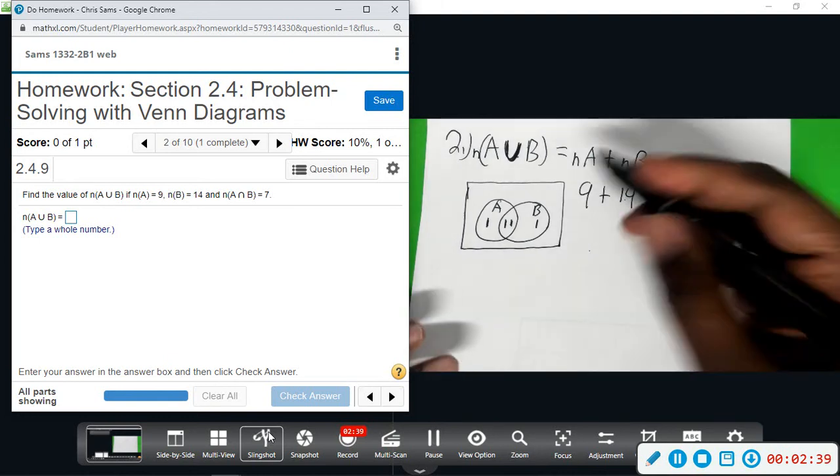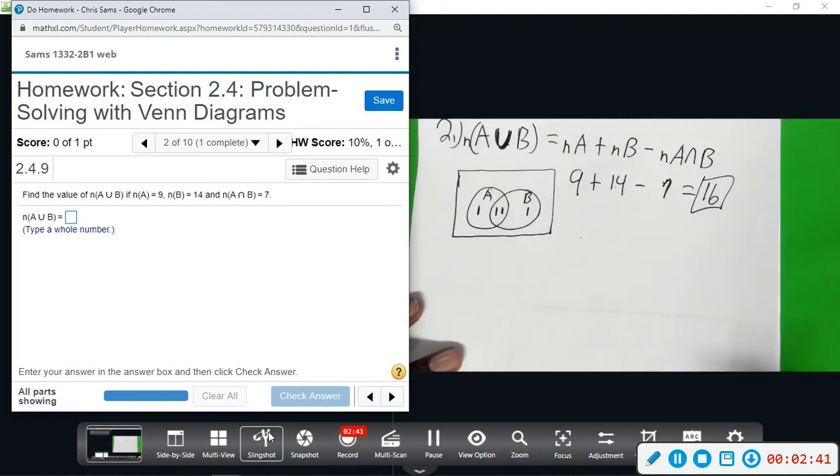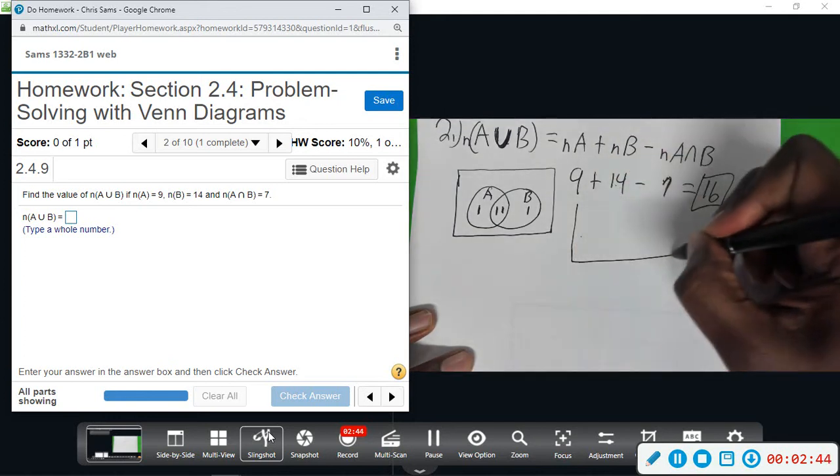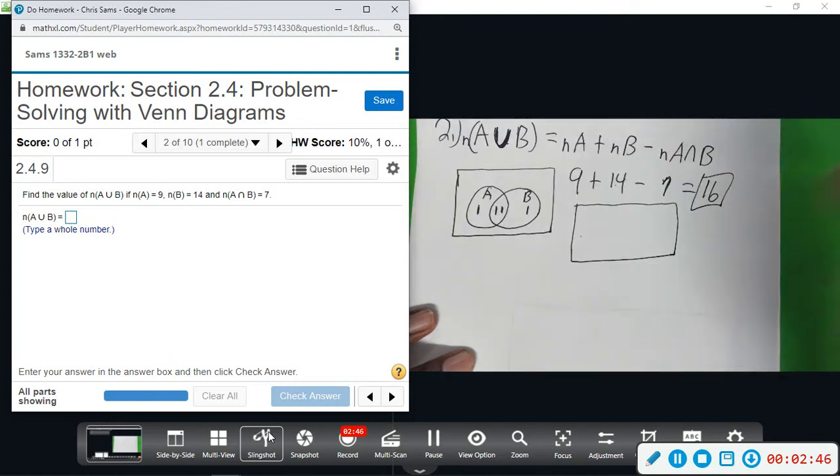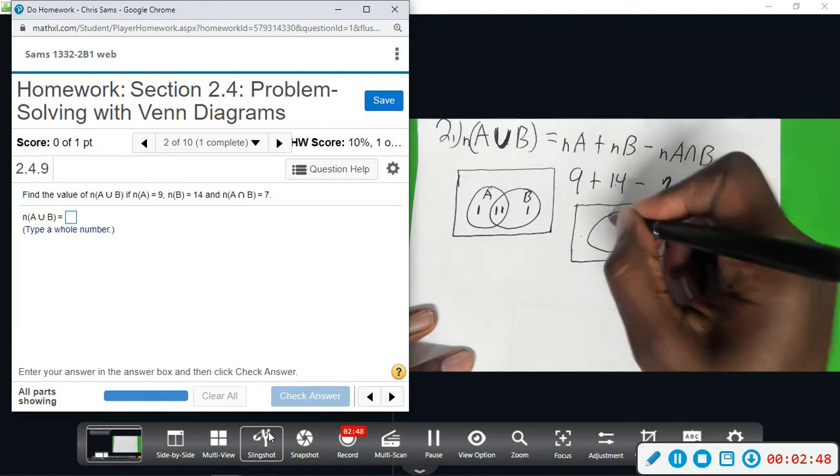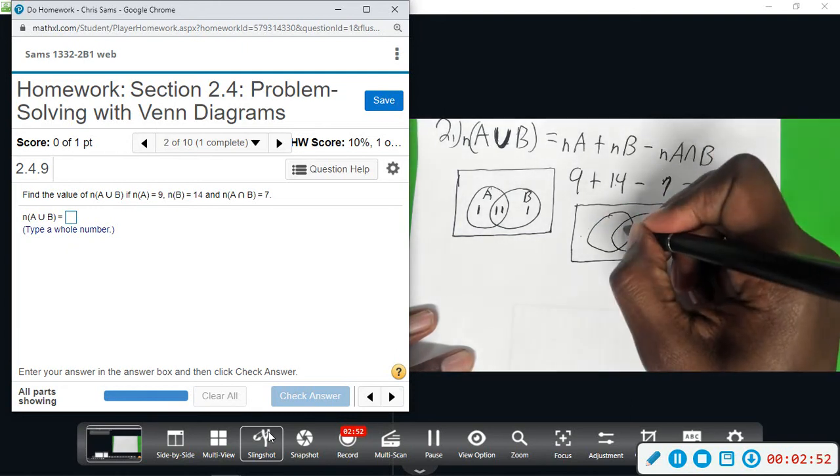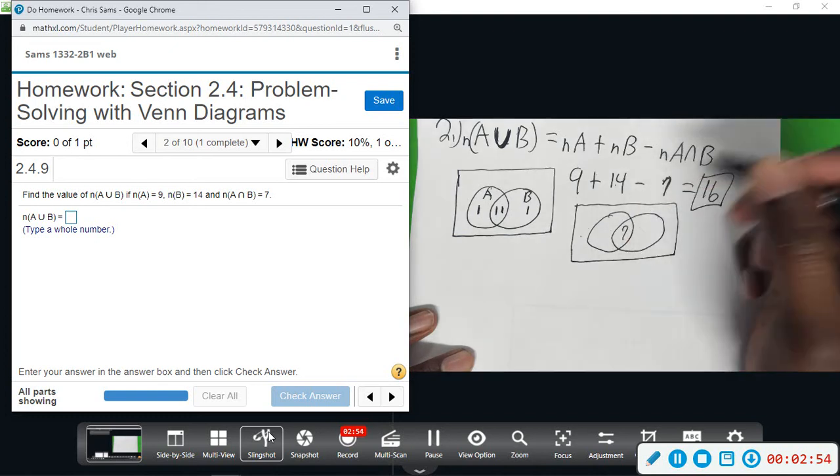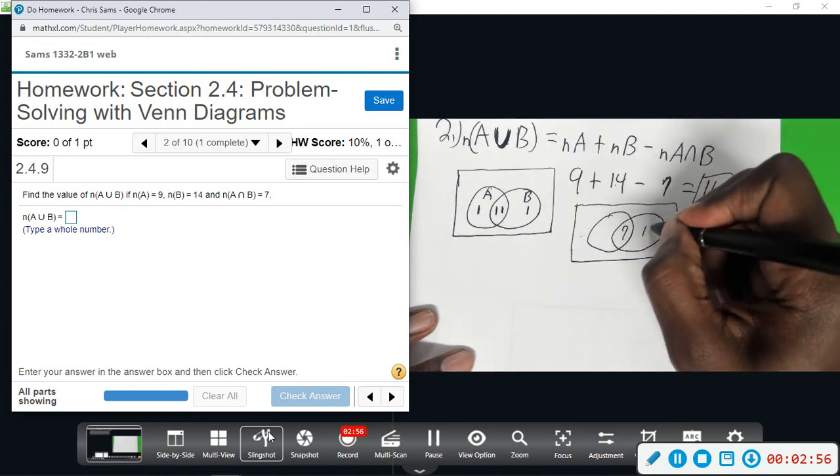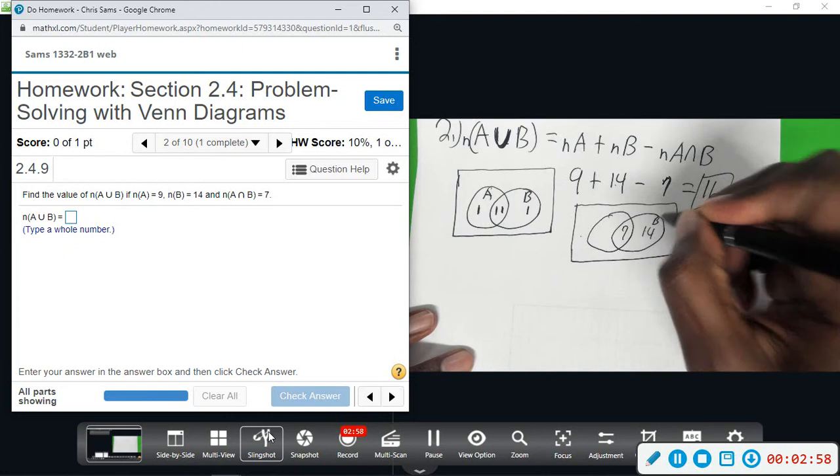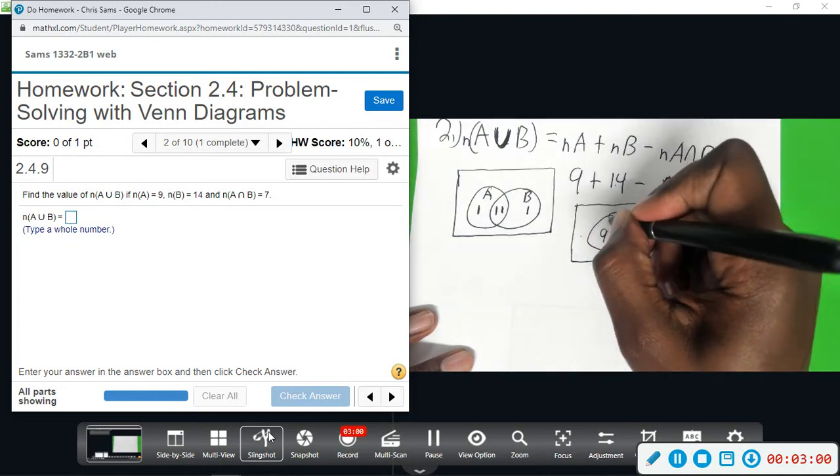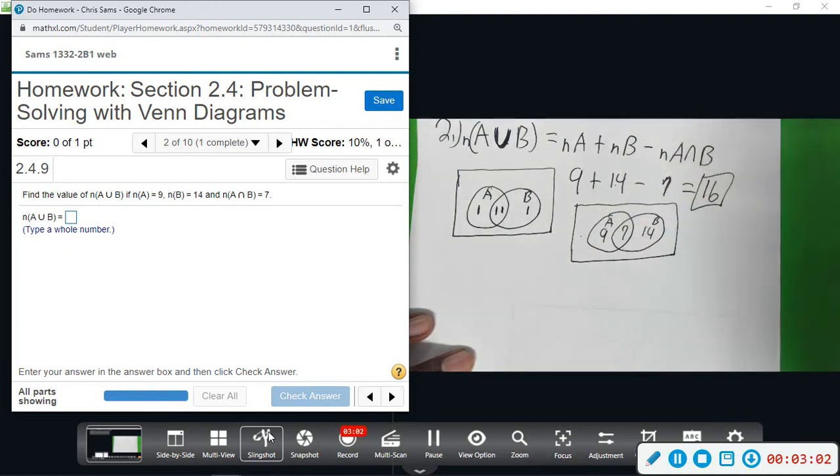So, there's two ways this Venn diagram can be drawn. This is the way, this first way is the way that uses the formula. So, we would have here, here. The intersection is 7, B is 14, and A is 9. Now, this is one way.